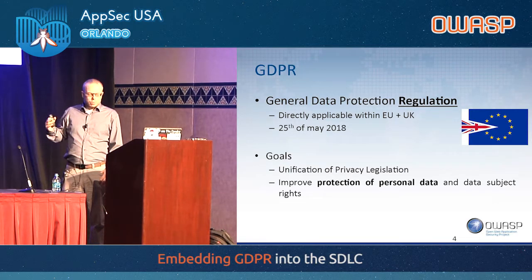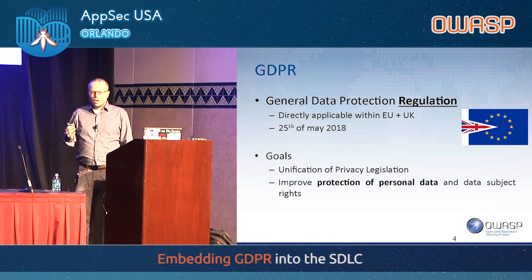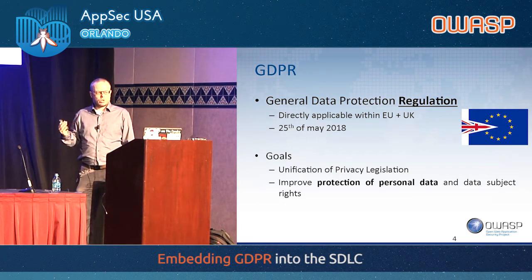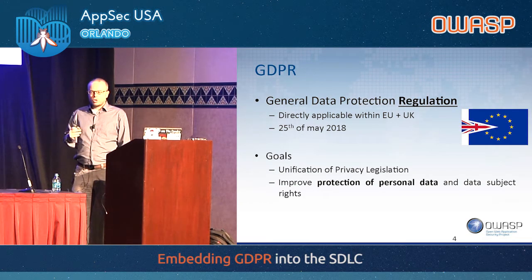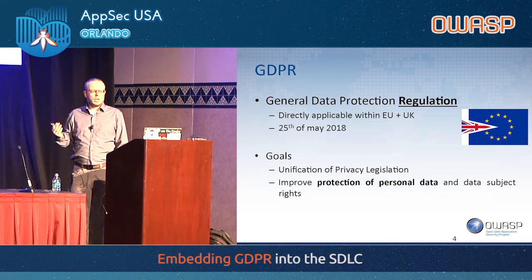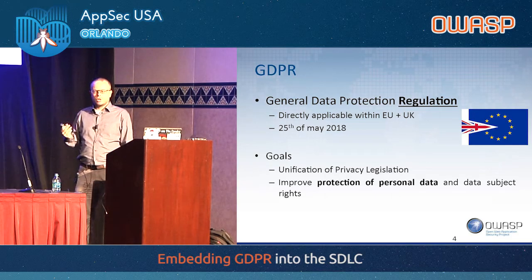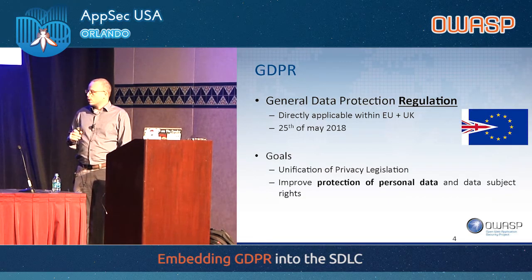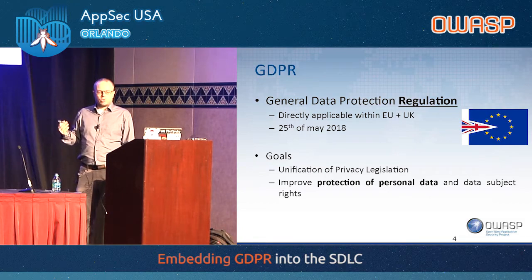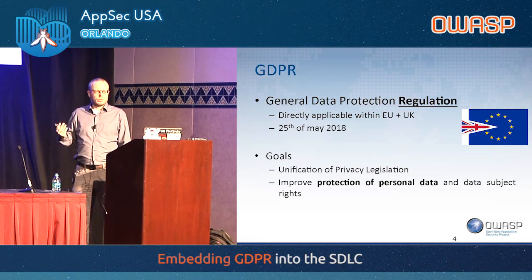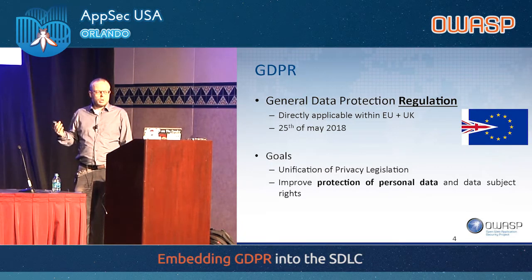How did this privacy regulation come to be? There was a privacy regulation in the EU made in 1995. A lot of things have changed since then — in 1995 we had the internet, but it wasn't all that big, there was no tracking of users, and social media was virtually non-existent. When legislators sat together to look at what could be improved for the privacy of European citizens, they figured out that the old privacy law simply didn't fulfill any of the things it should be doing.